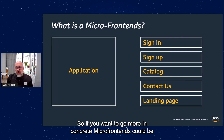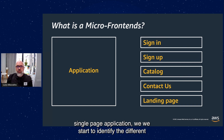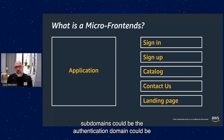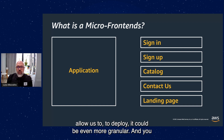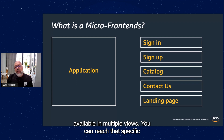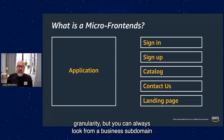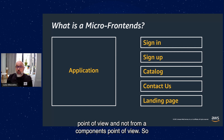To go more concrete: take a legacy single-page application. We start to identify the different domains — it could be the authentication domain, the catalog, the landing page, and so on. We create independent artifacts that allow us to deploy. It can even be more granular — for example, a payment form that should be available in multiple views. But you always look from a business subdomain point of view, not from a components point of view.